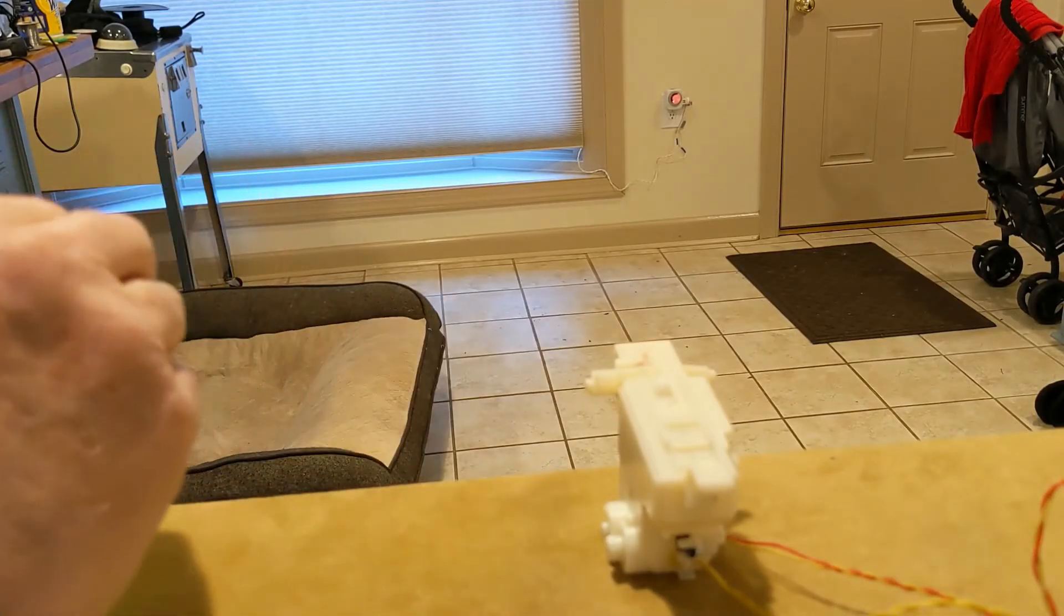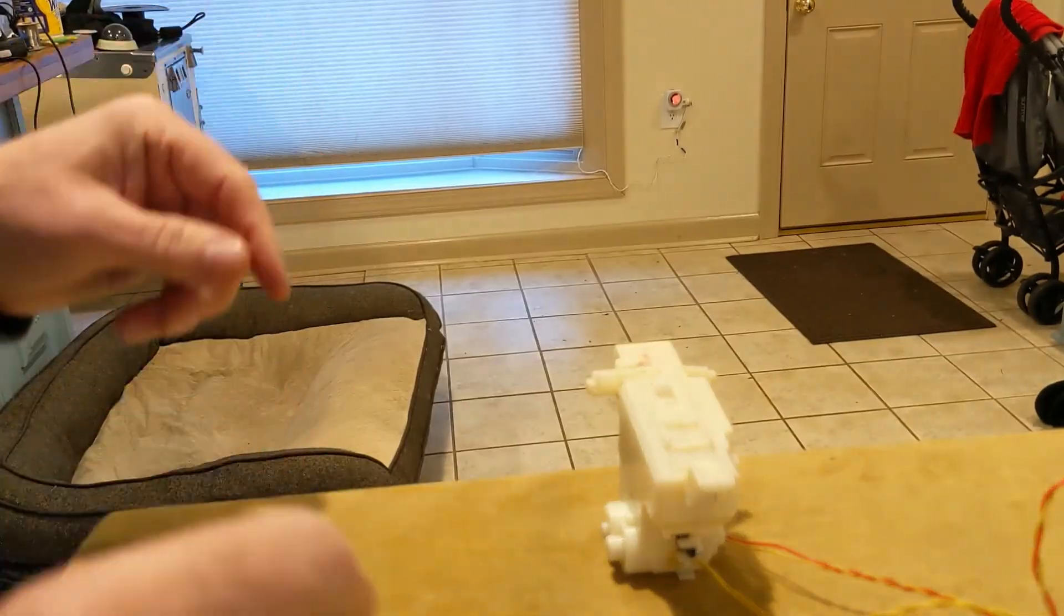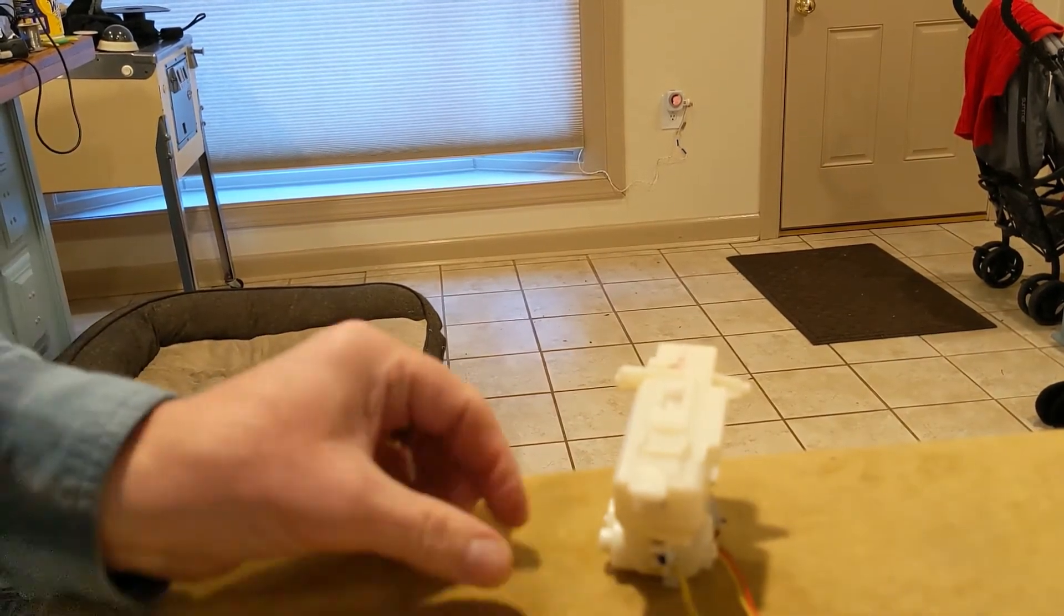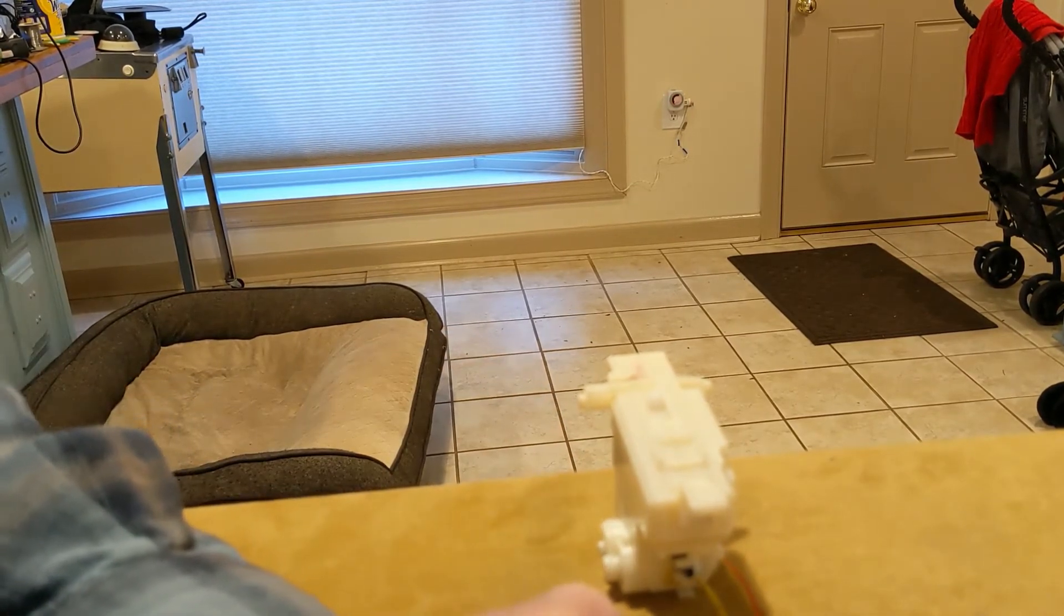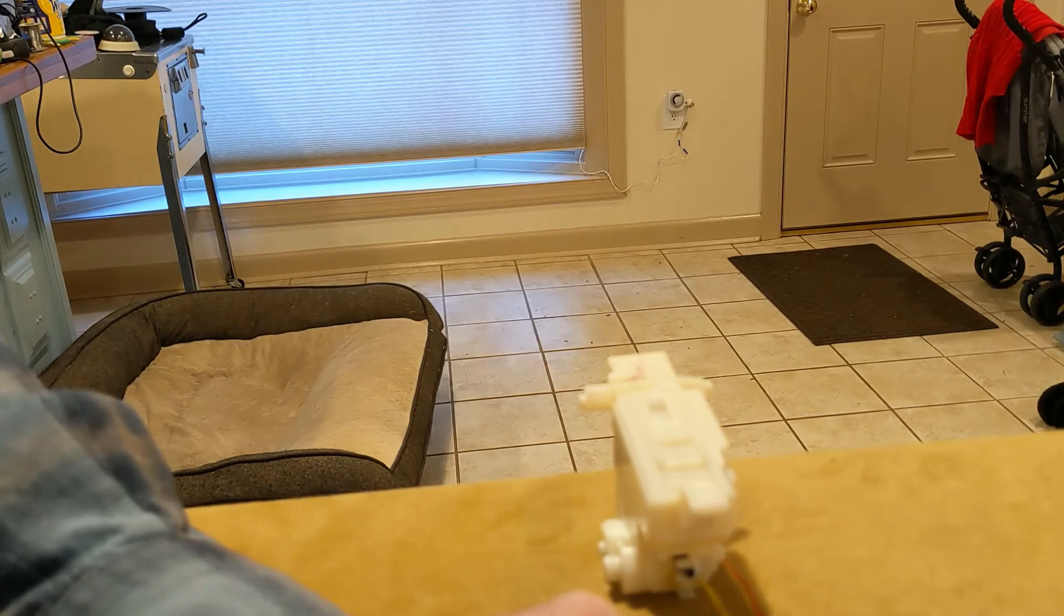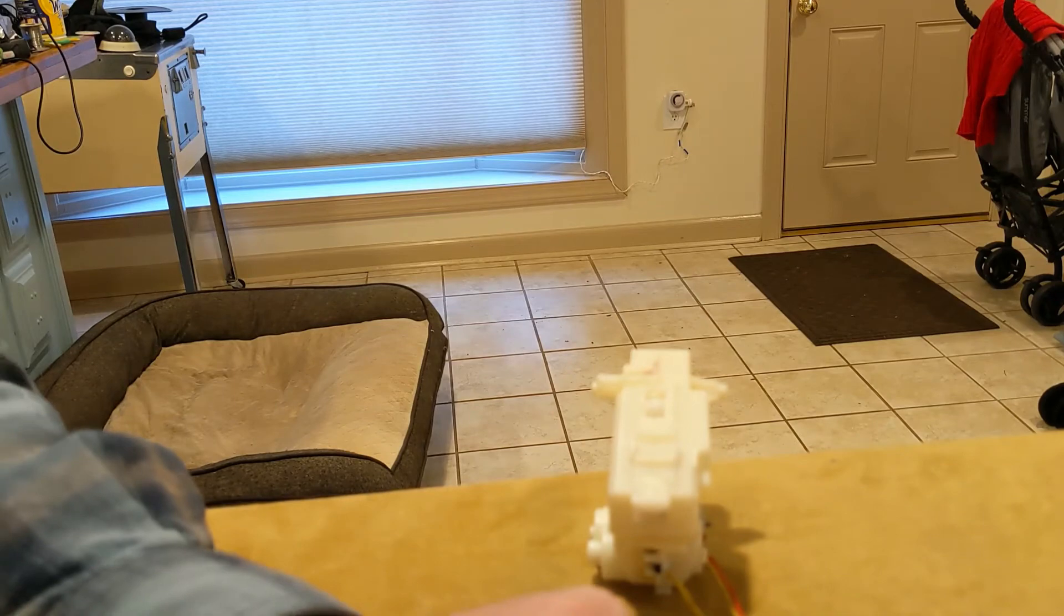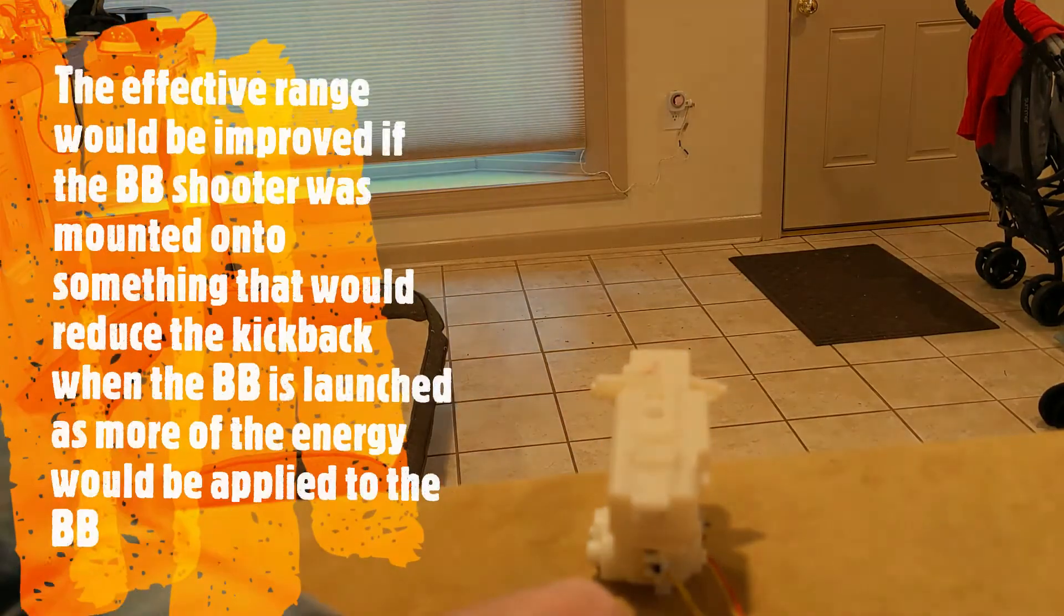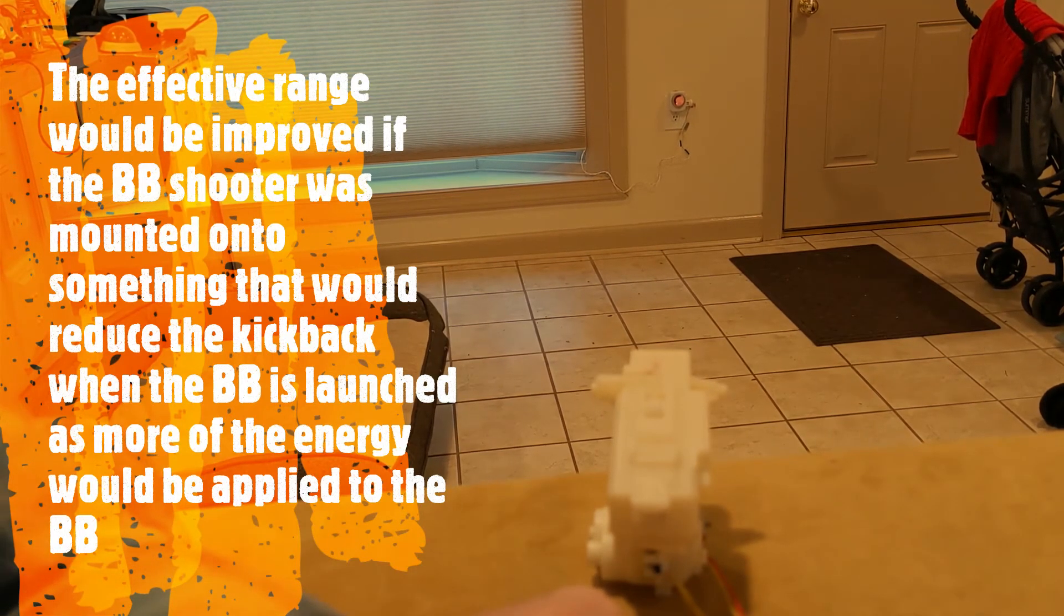So I've changed it. I'm shooting now across the room. I'm going to drop a BB in there. That's about 14 feet to the target, which is the window blind there. I'm going to go ahead and shoot this and see if it can hit that. Yeah, it does hit that. It's starting to drop. So I would say the effective range might be 14 to 12 feet.